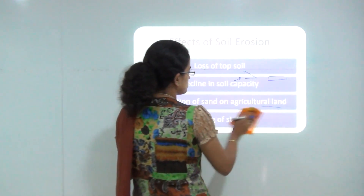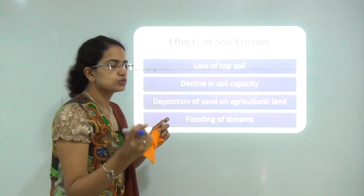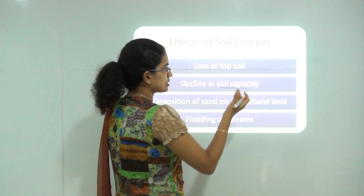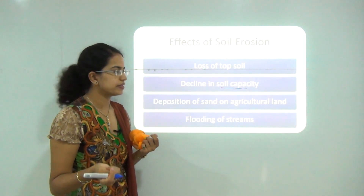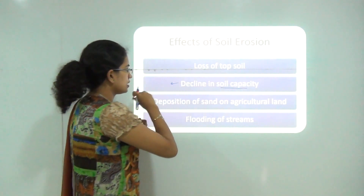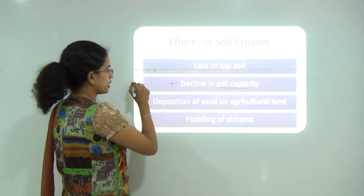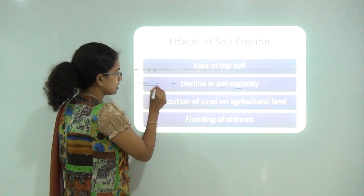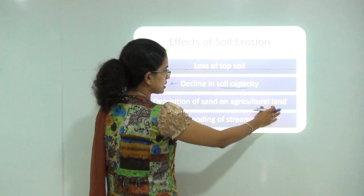Now, what are the effects of soil erosion? Soil erosion loosens the top layers of soil, decreasing its capacity to grow agricultural crops or vegetation. The basic reason is that most fertile elements are found in the topmost layers of the soil, and if that top layer washes away, the fertility of the soil decreases. Another effect is the deposition of sand on agricultural land.